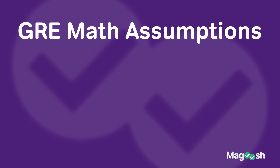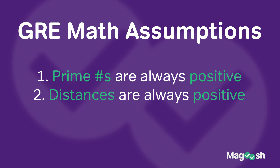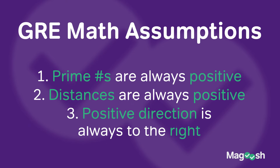Now that we know the what and the how, it's time to talk about some other important information, starting with assumptions. On the GRE math section, prime numbers are always going to be positive. Distances — such as from one point to another — are always going to be positive; there are no negative distances. And finally, positive direction is always to the right, so if you see a number line, a larger number will always be to the right of a smaller number.